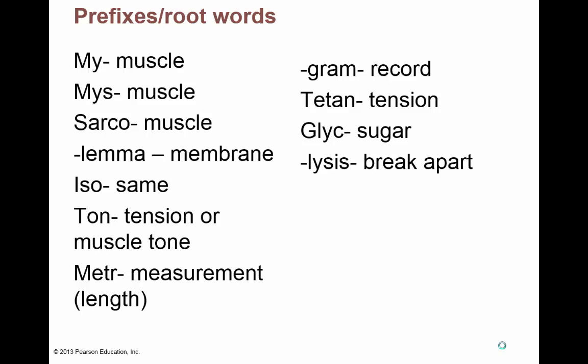You'll see ISO, which means the same tone — tension or muscle tone. Anytime you have METR, it's almost like metric — it means measurement, relating to measurements of length. Anytime something ends in -gram, it's a record of something — like an electrocardiogram, a record of the electricity in the heart. Tetan means tension, like tetanus. Glyc means sugar and lysis means to break apart.